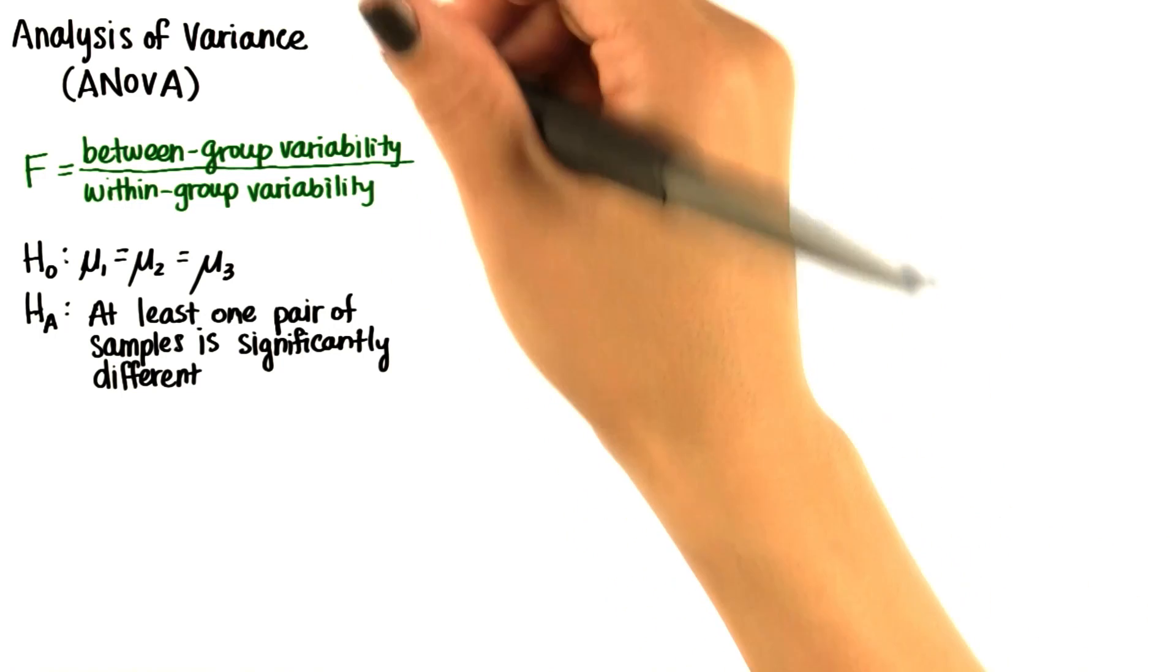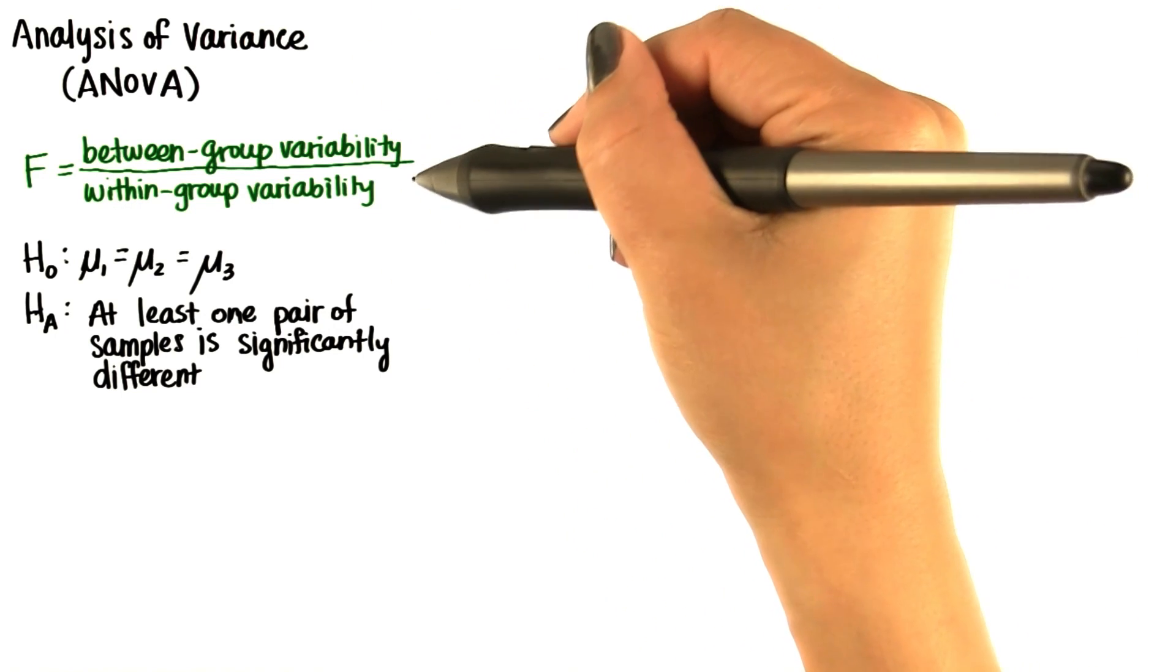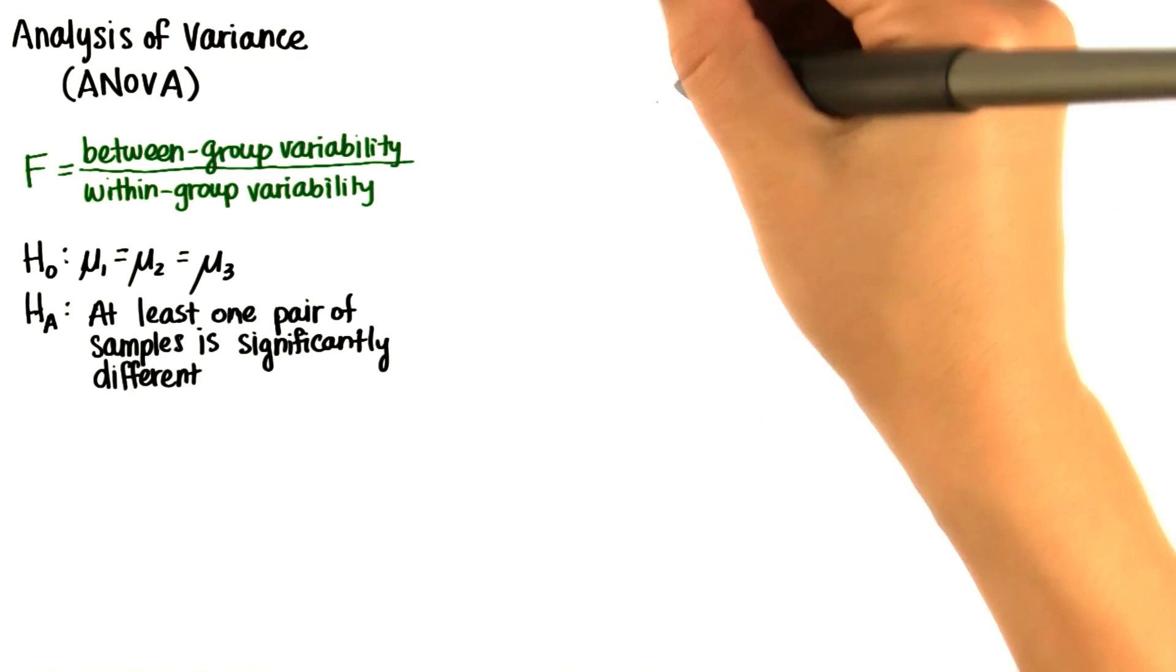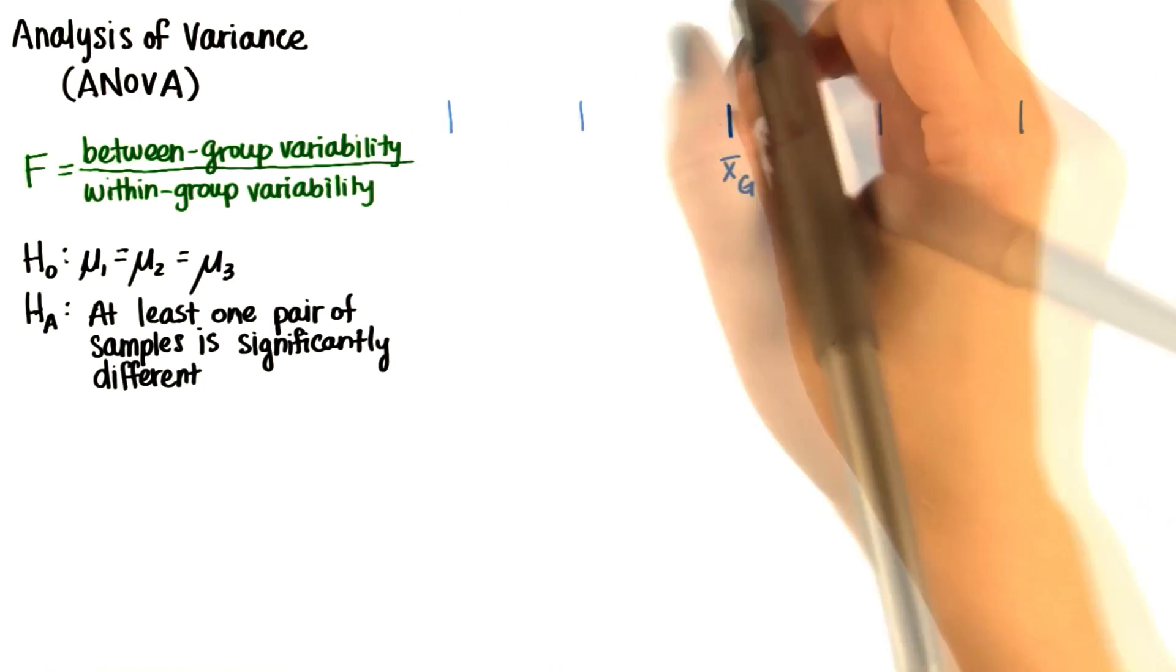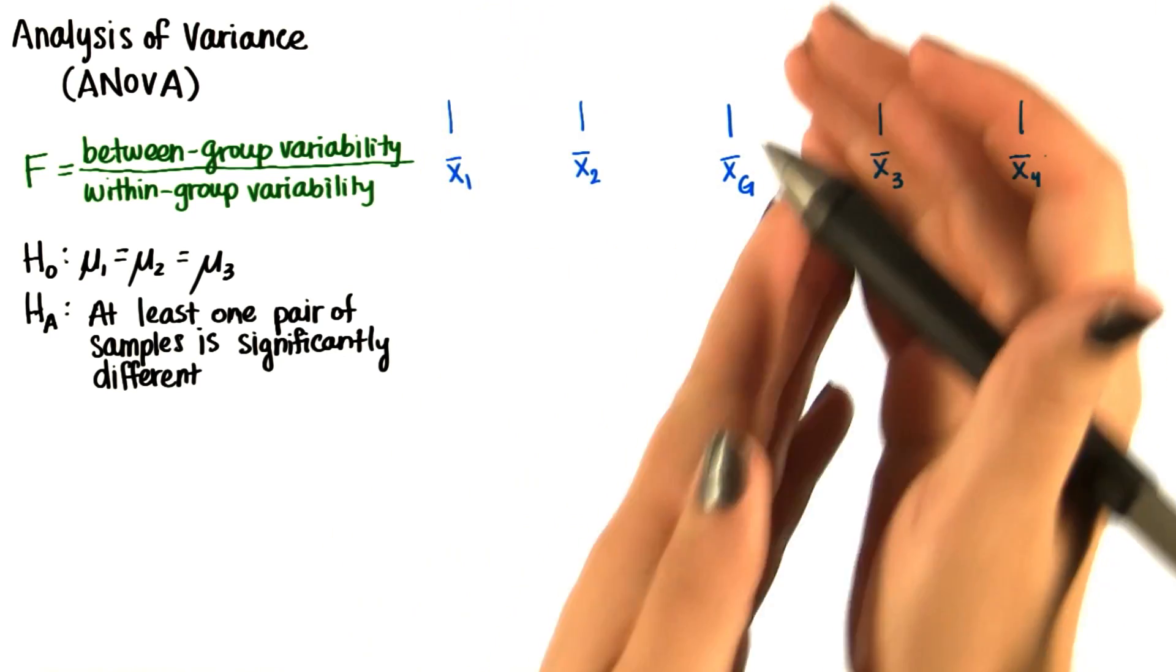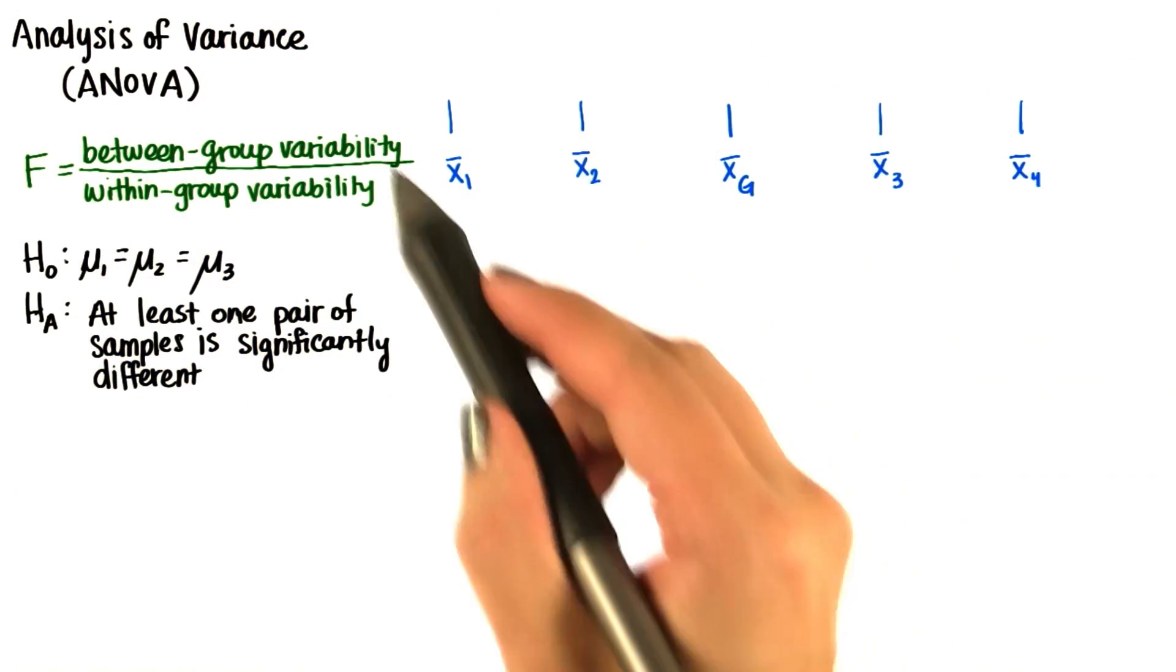We need to formalize how we will precisely measure each type of variability. We already decided that we're going to use the grand mean and use the same idea as standard deviation to measure the spread of these sample means.